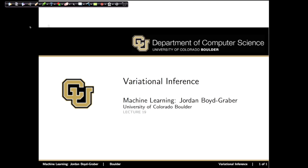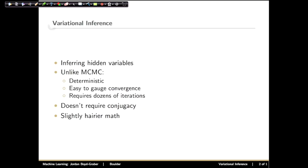Today we're going to continue our discussion of probabilistic inference with variational inference. Variational inference, like Gibbs sampling that we talked about last time, is a way of inferring hidden variables in a model. Unlike Gibbs sampling, which is an instance of Markov chain Monte Carlo inference, variational inference is deterministic.